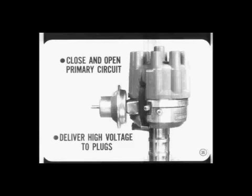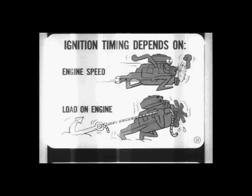Next on the program is the distributor. It has two basic functions: to close and open the primary circuit so a high voltage will be induced in the ignition coil, and deliver the high voltage to the spark plugs at the right time. Let's consider ignition timing. Ignition timing requirements depend upon engine speed and the load on the engine. And of course, engine speed and load change every time the driver moves the accelerator. That's where the centrifugal and vacuum advance come in.